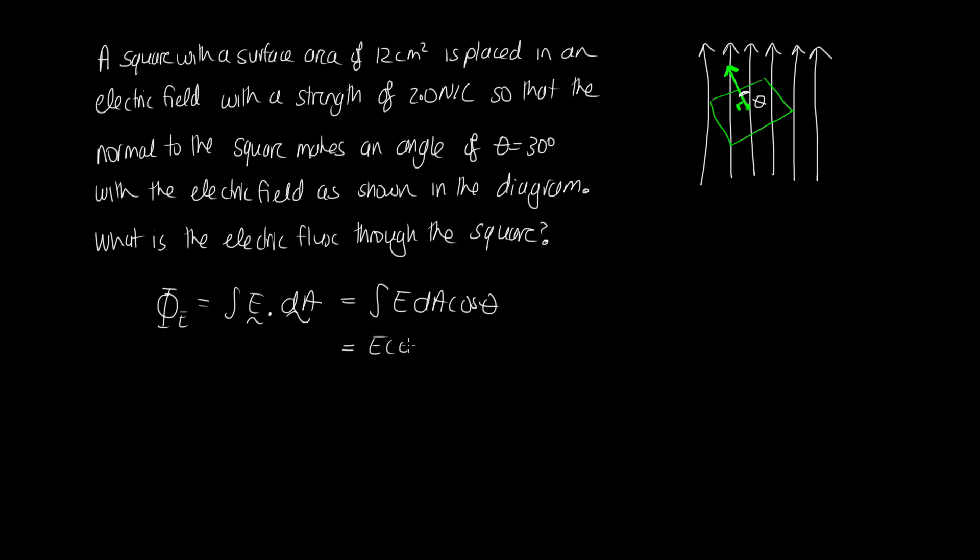So we can write this as E·cos(θ) times the integral over the surface area. So when we integrate over the surface area this just gives us the total surface area. So this is literally just E·A·cos(θ). So now we can just substitute in.